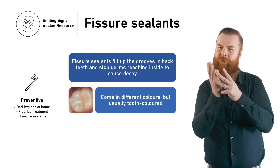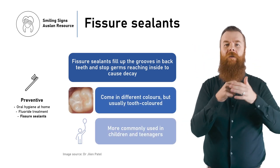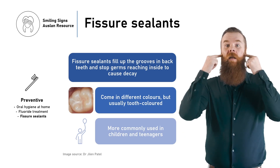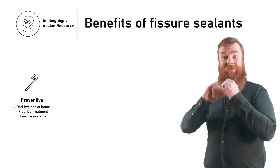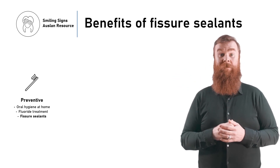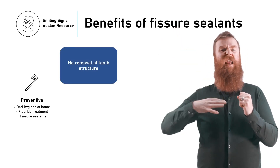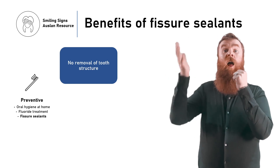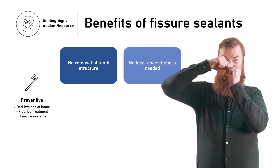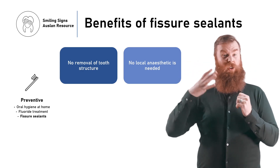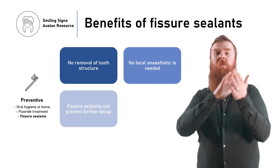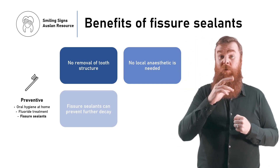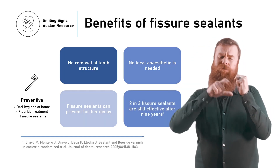Fissure sealants may be white, clear or sometimes even pink. They are commonly used to protect the back teeth of kids and teenagers. Some benefits of fissure sealants are that the dentist doesn't need to cut away the tooth, and the tooth doesn't need to be made numb. Placing a fissure sealant may help to prevent tooth decay from developing. Approximately two in three fissure sealants are still in place and preventing tooth decay after nine years.